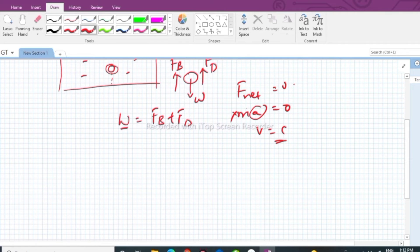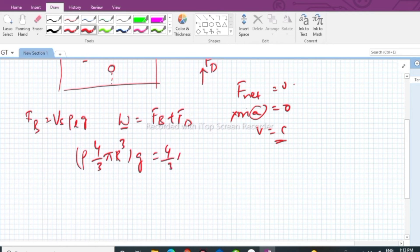Now how do I find weight? Density into volume. Let us say the density of the liquid is rho. So rho into volume, volume of the sphere four-third pi r cube, this is the mass multiplied by g. What is Fb? Fb is equal to volume of solid into density of the liquid into g. So volume of the solid is four-third pi r cube.